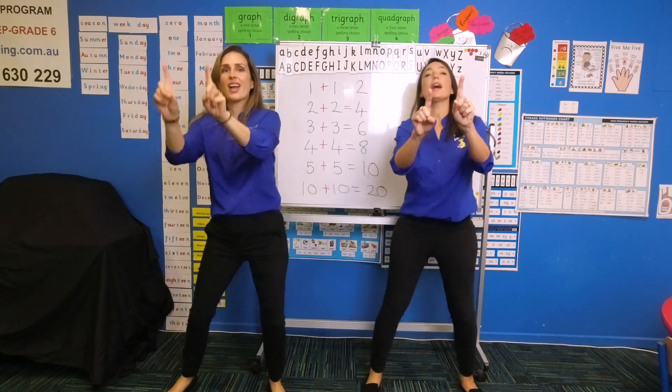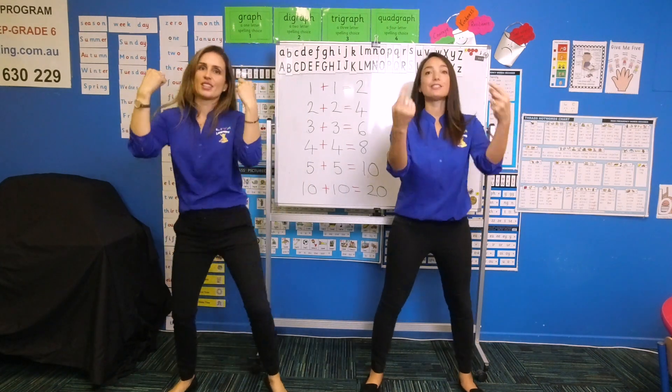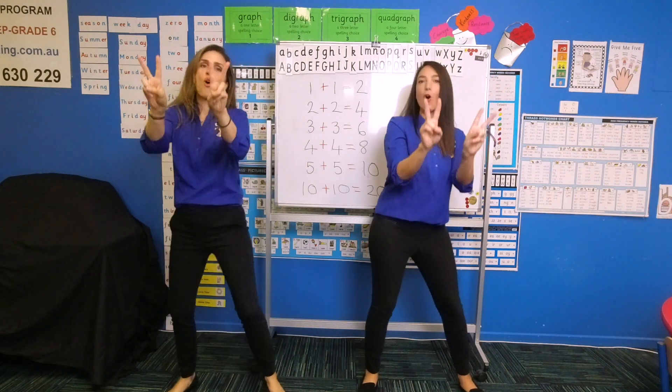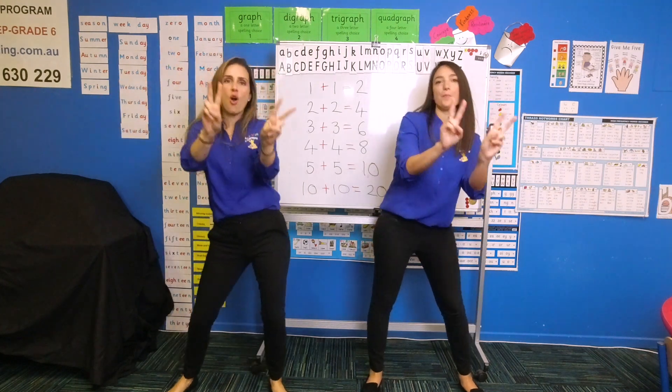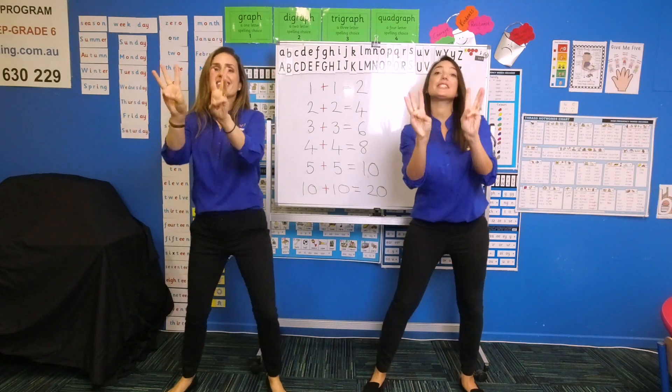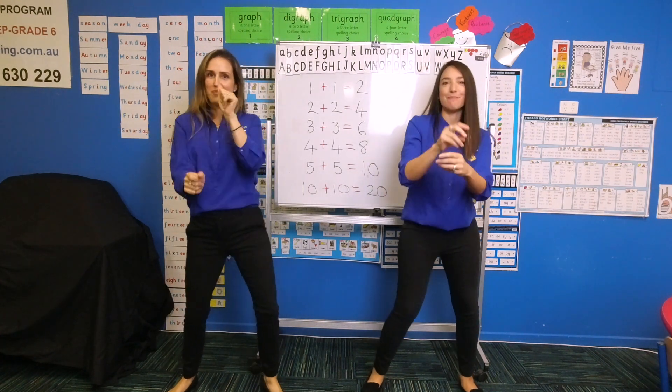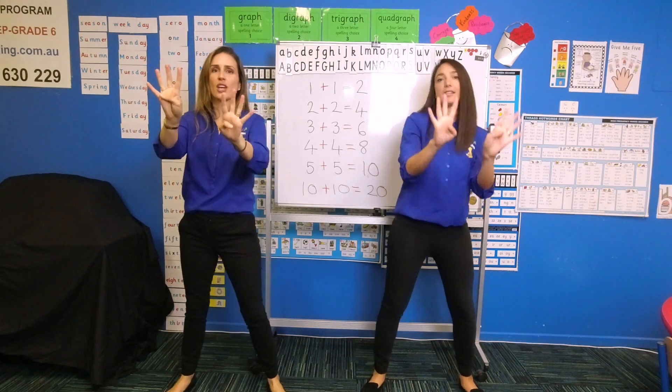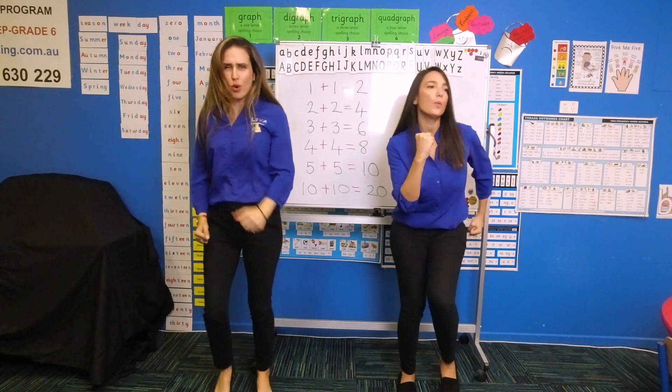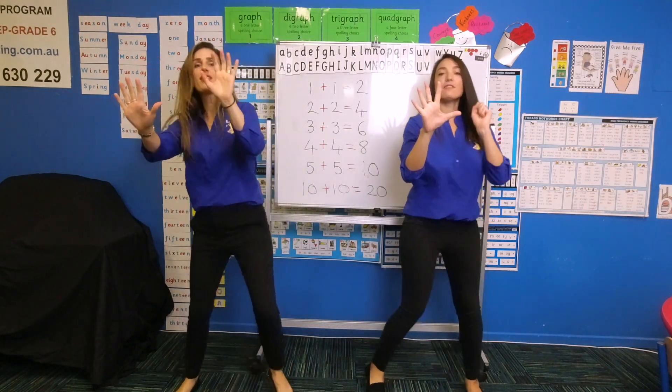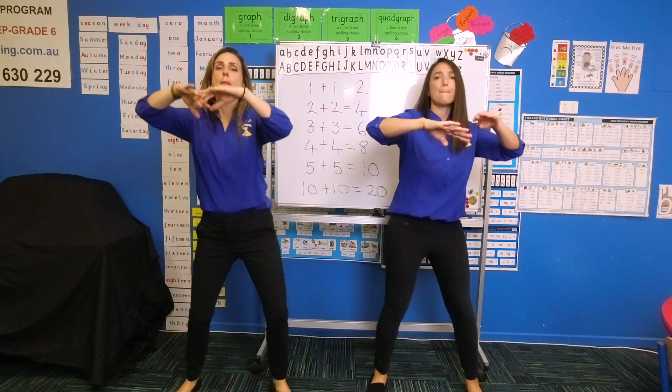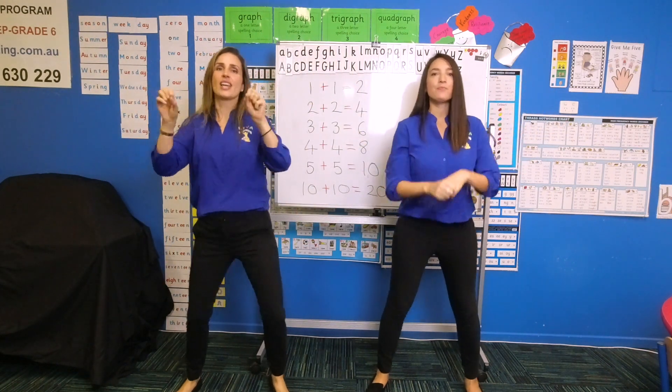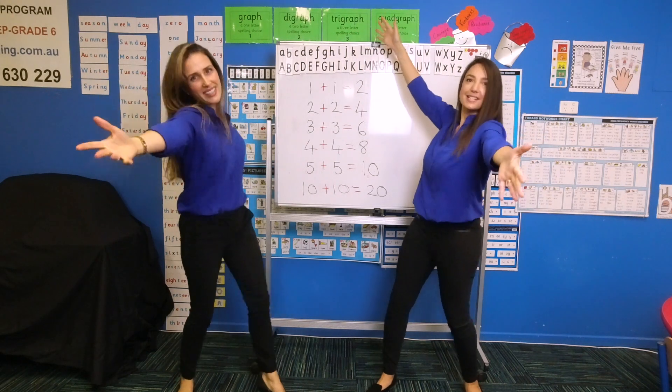1 and 1 is 2, that's for me and you. 2 and 2 is 4, that's a couple more. 3 and 3 is 6, a bag of party tricks. 4 and 4 is 8, hurry up we're going to be late. 5 and 5 is 10, a big fat hen. 10 and 10 is 20, we know plenty.